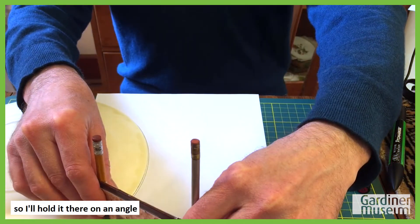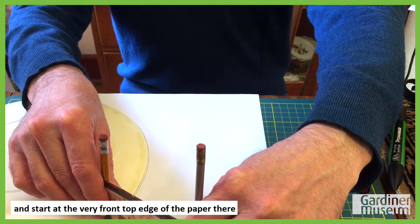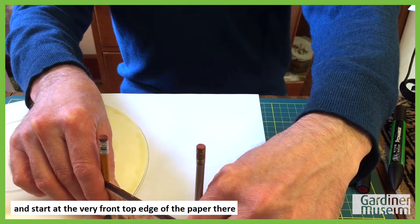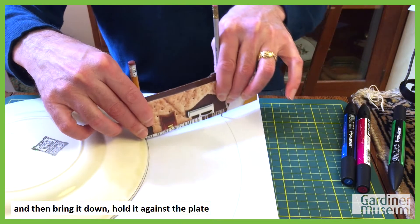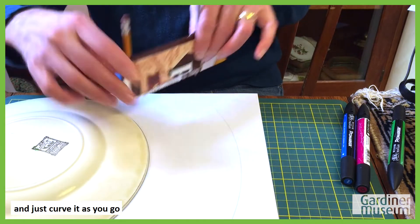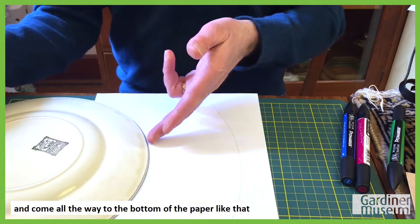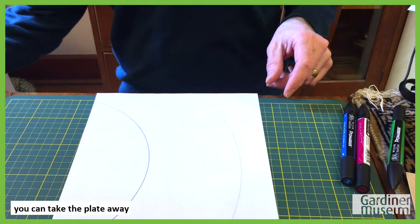So I'll hold it there on an angle and start right at the very front top edge of the paper there. And then bring it down, hold it against the plate, and just curve it as you go and come all the way to the bottom of the paper there. You can take the plate away.